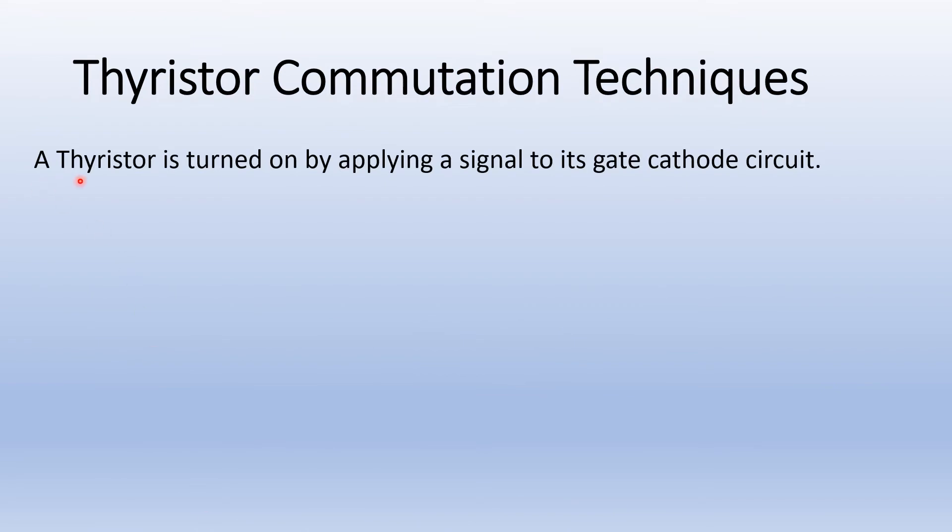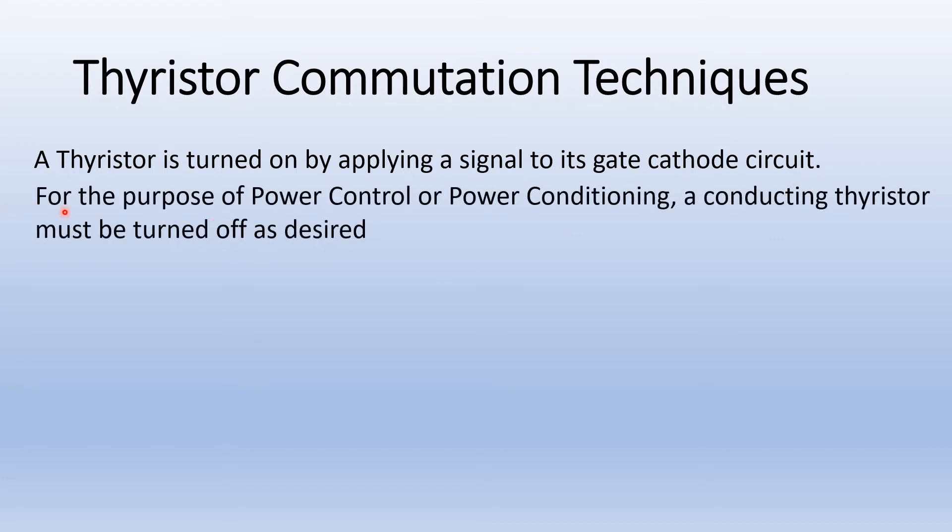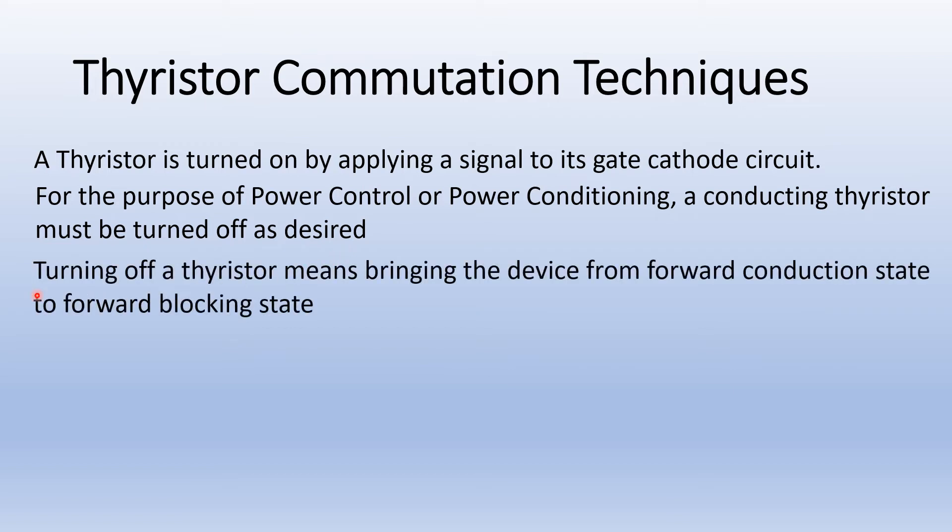A thyristor is turned on by applying a signal to its gate cathode circuit. For the purpose of power control or power conditioning, a conducting thyristor must be turned off as desired. Turning off a thyristor means bringing the device from forward conduction state to forward blocking state.